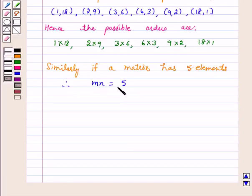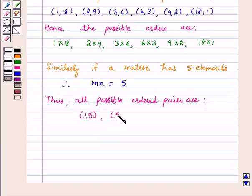Now we have to find all ordered pairs of natural numbers whose product is 5. Thus, all possible ordered pairs are (1,5) and (5,1). Hence, the possible orders are 1 by 5 and 5 by 1.